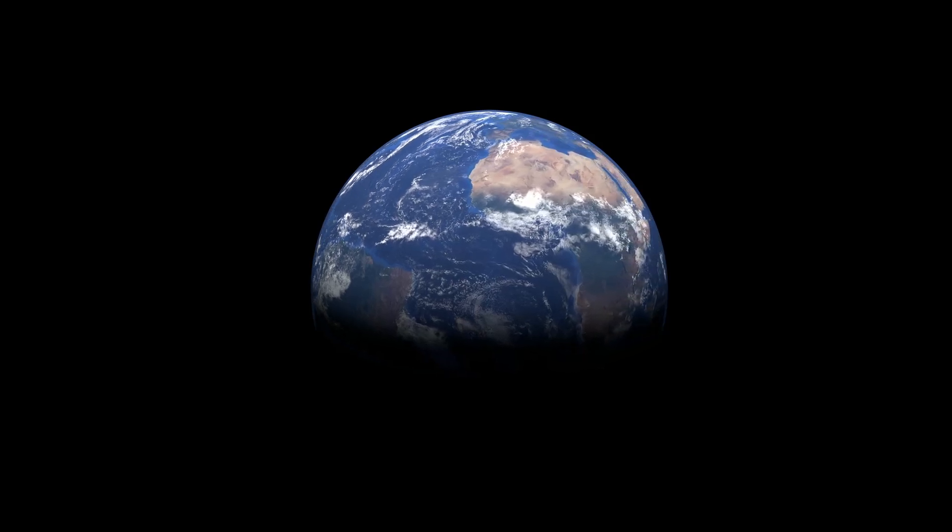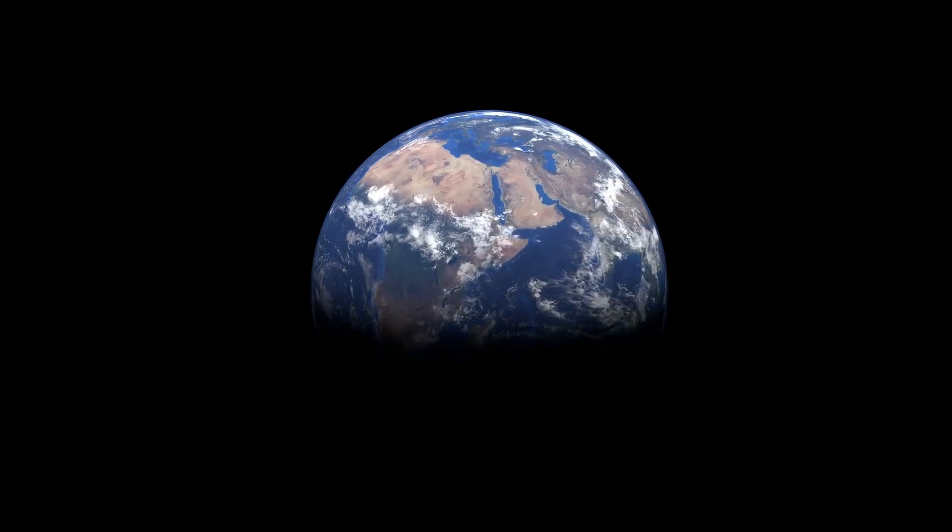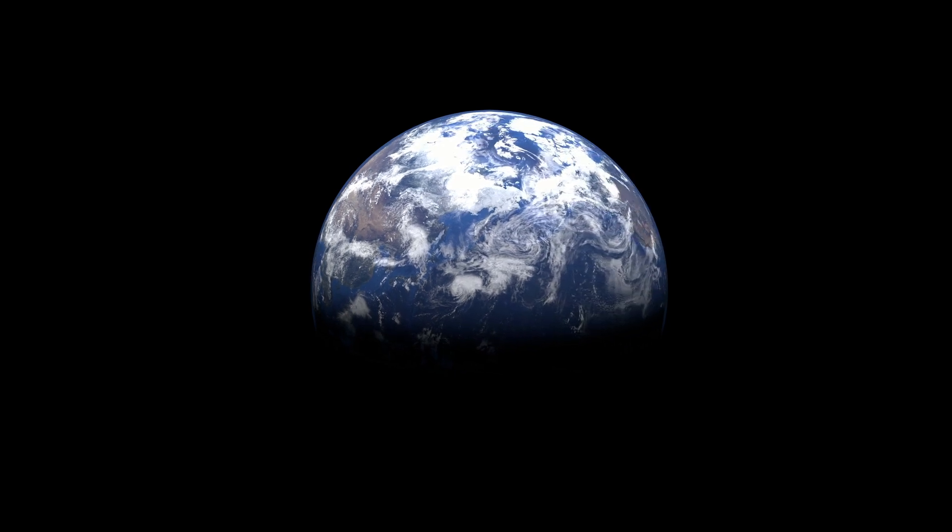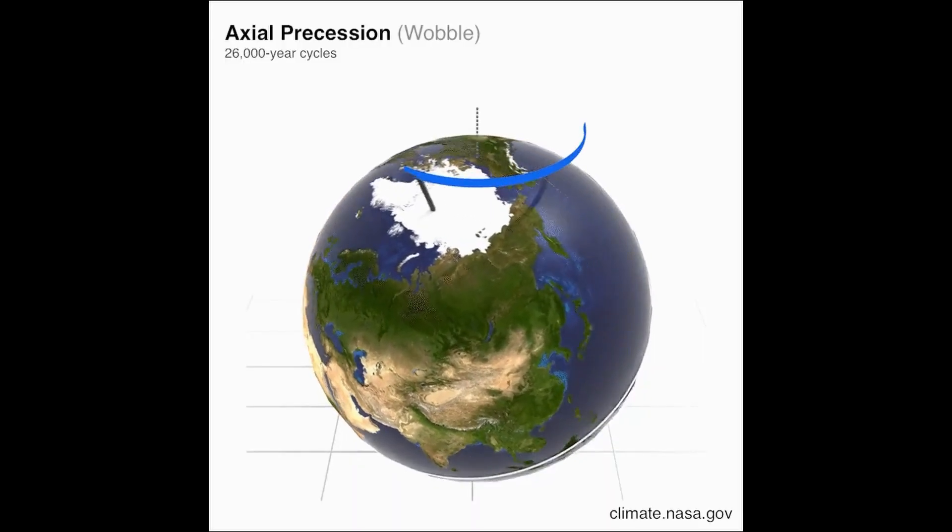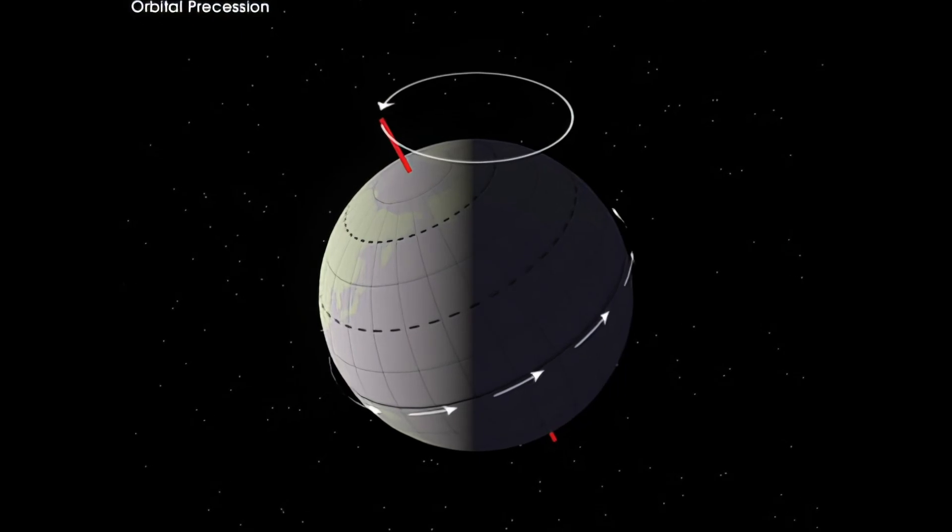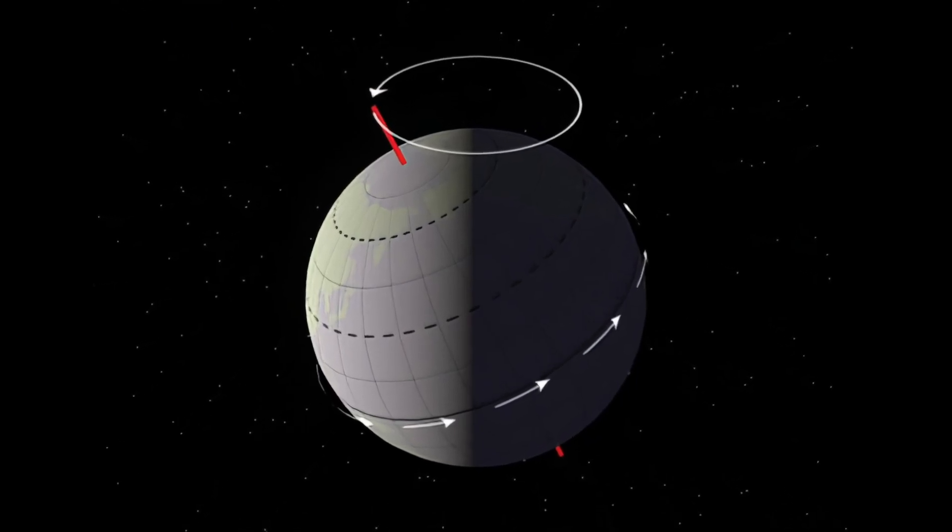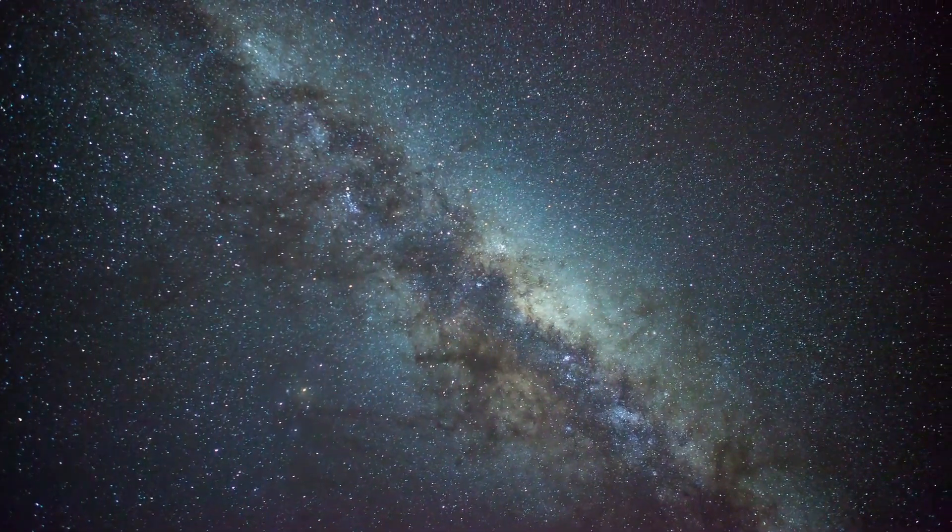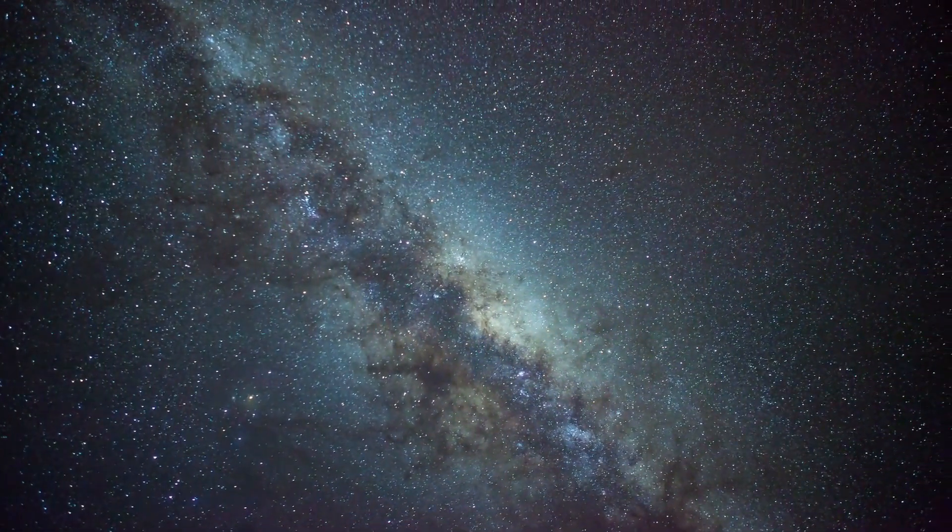The Earth spins on an axis that runs from the North Pole to the South Pole. This rotation is what causes day and night, but it's not a simple constant motion. The axis of the Earth also precesses or wobbles like a top. This axial precession completes a full rotation about every 26,000 years. This makes the position of the North Star in the sky change over time, as it has in the past and will in the future.